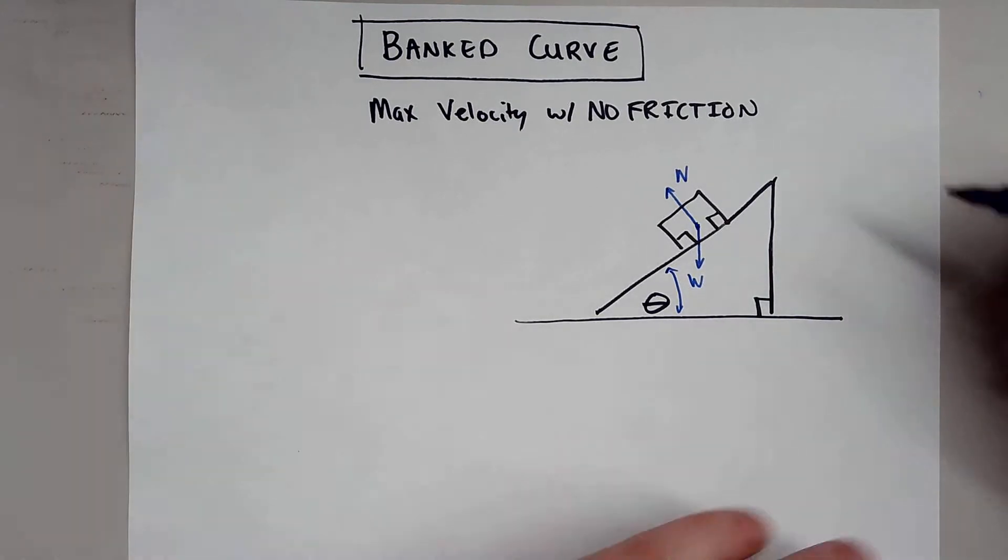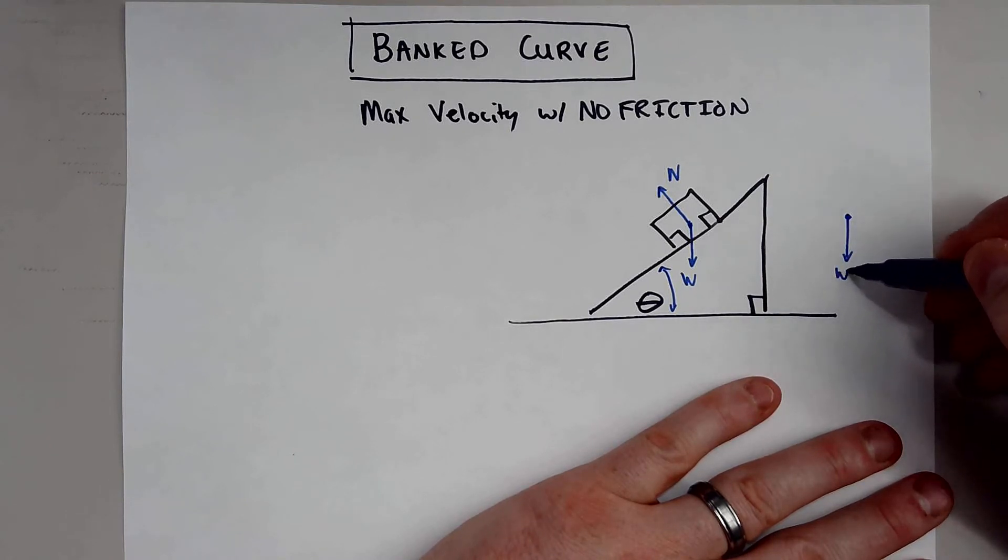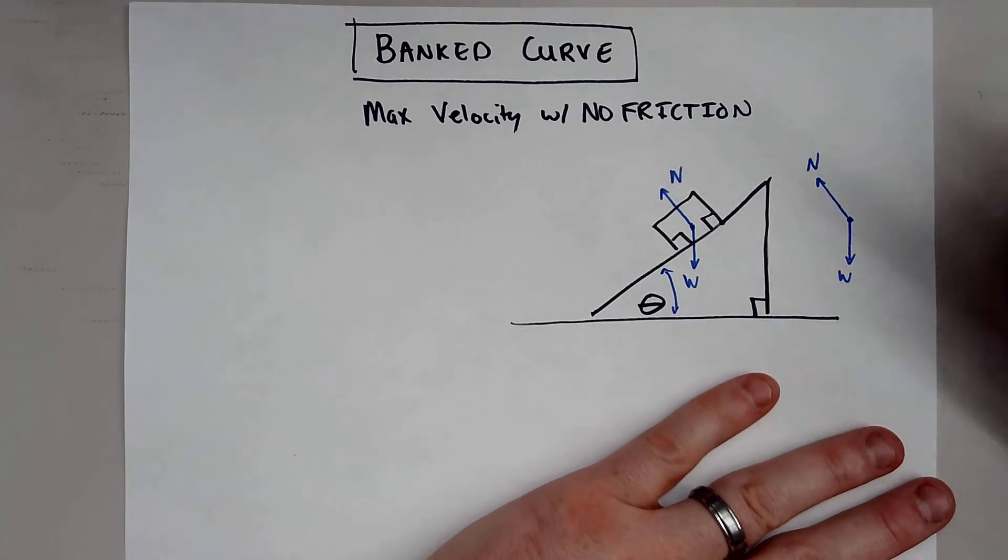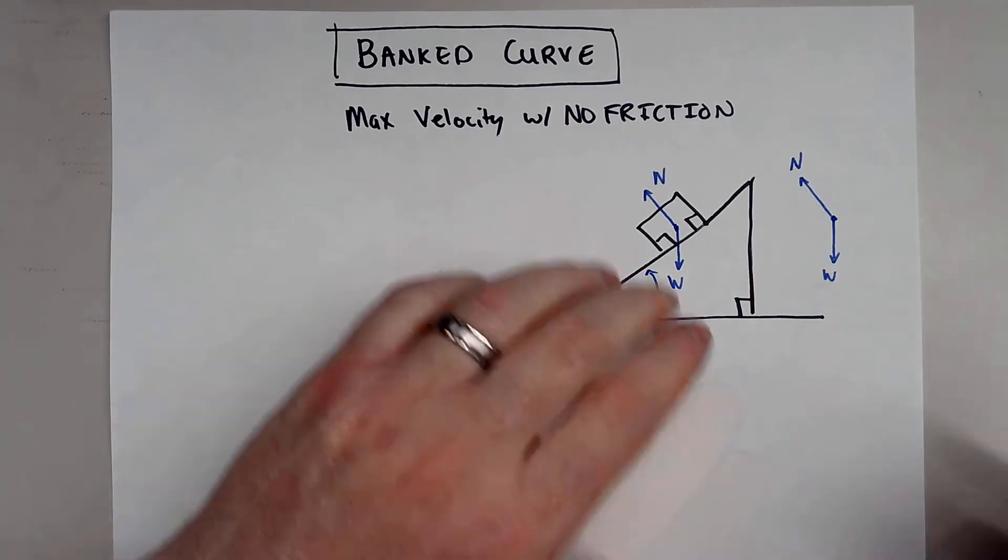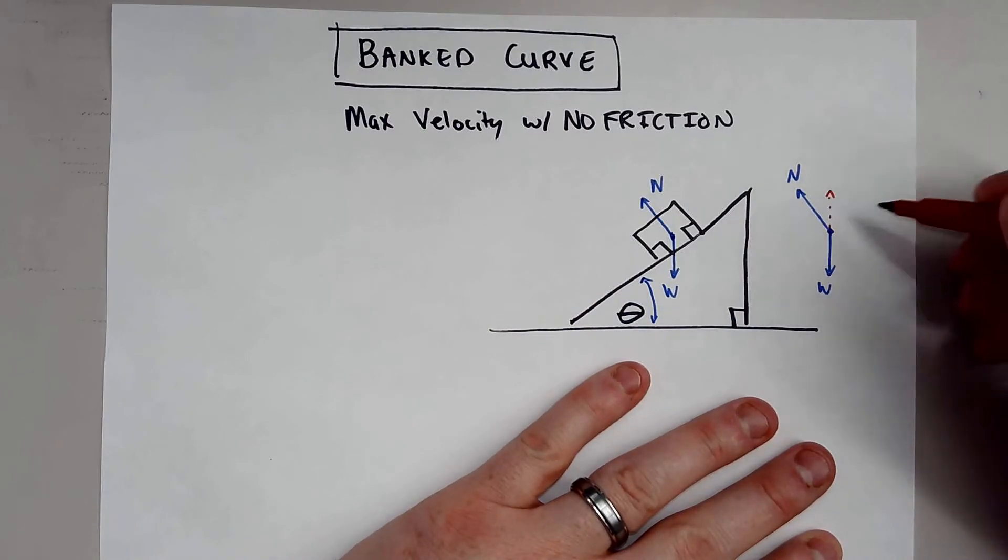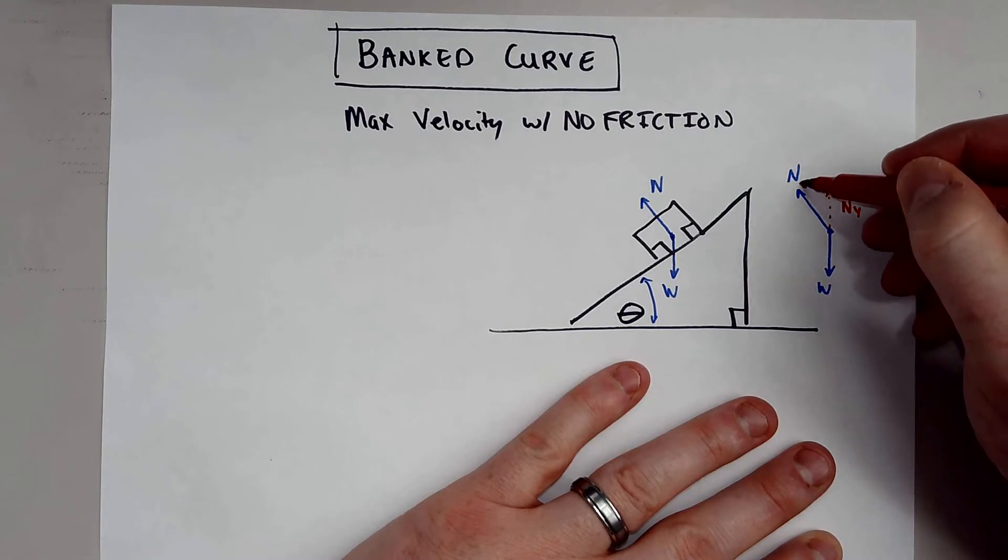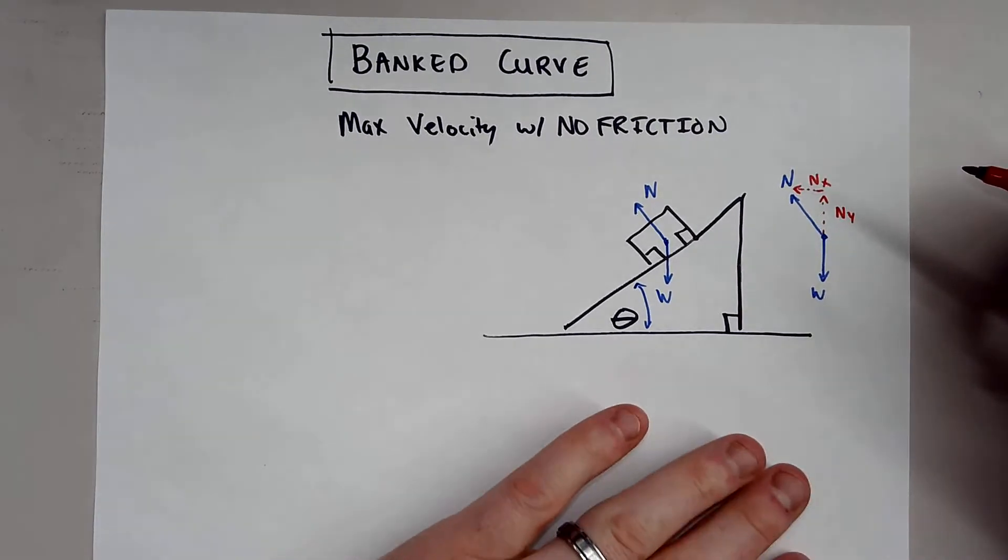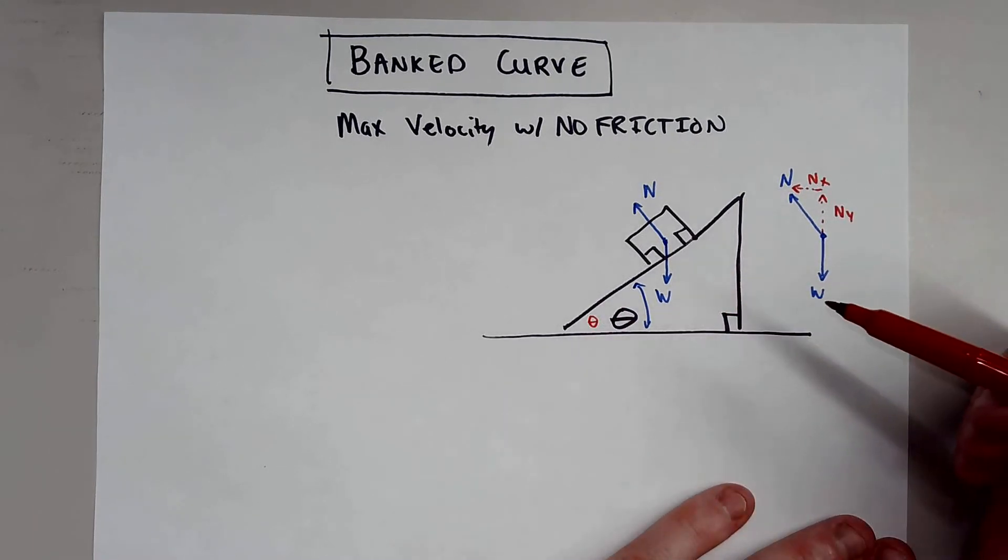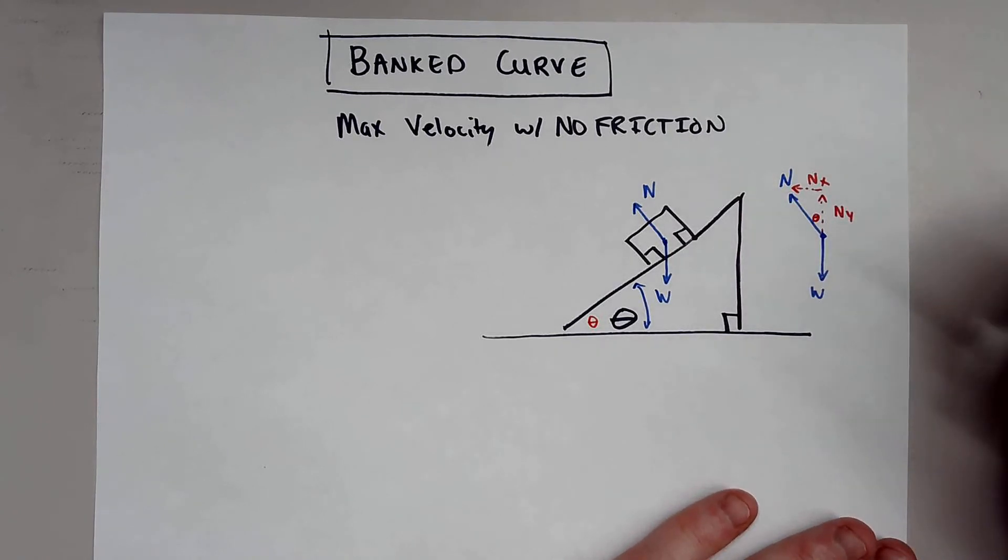And this is kind of where the magic comes in. If we were to take this triangle right here and pull this out, it makes it a little bit easier to see. We have our normal force. You will see that when you draw this out that there is a normal force component in the y direction and there's a normal force component in the x direction. So what's cool about this is if this is angle theta right here, that means this angle right here also has to be theta as well.